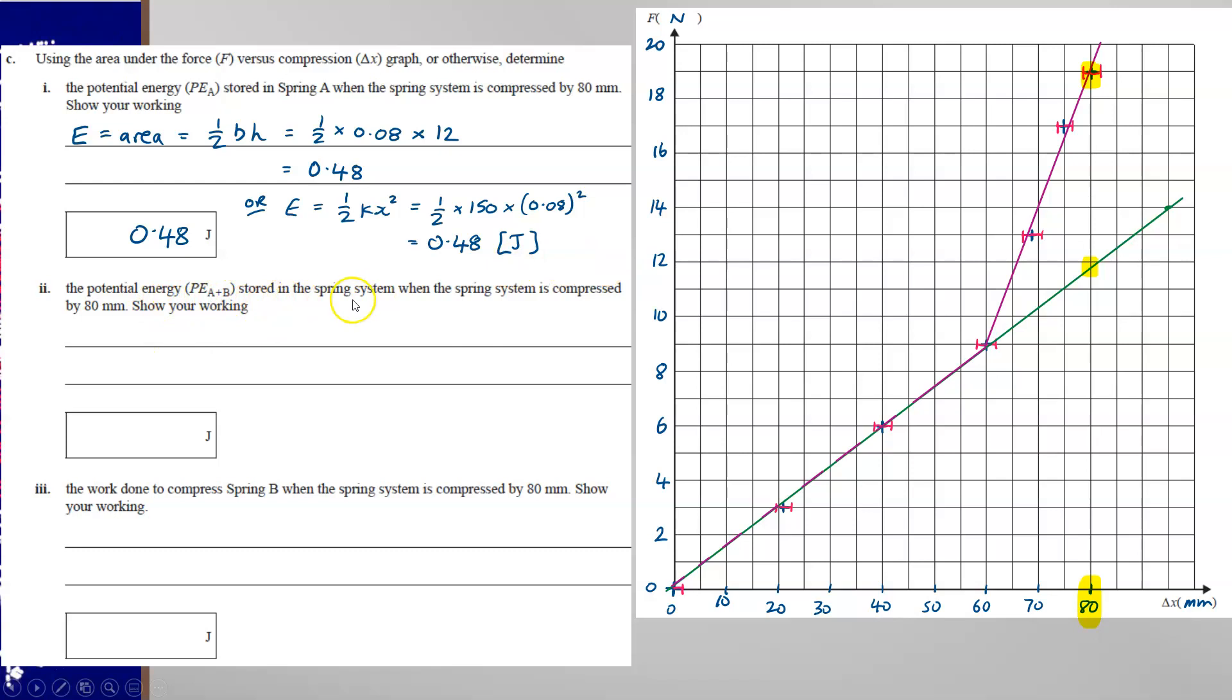Now the energy stored by the system when it's compressed by 80 millimetres would refer to this point here. And of course that would be the area of this shape here. Now to calculate the area of that shape you would probably best calculate the area of a triangle A and the area of trapezium B. So area A plus B is a half base times height plus a half base A plus B. That's the trapezium rule. And that gives you 0.55 joules.